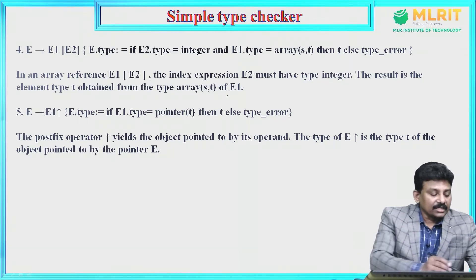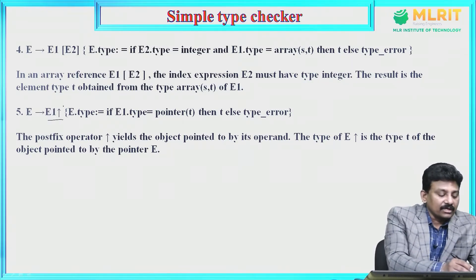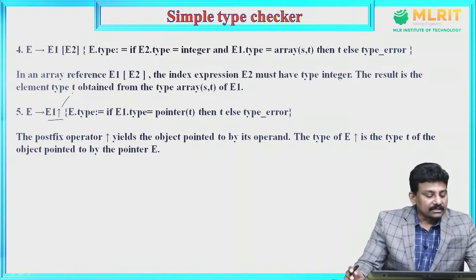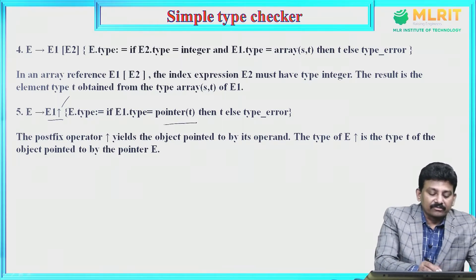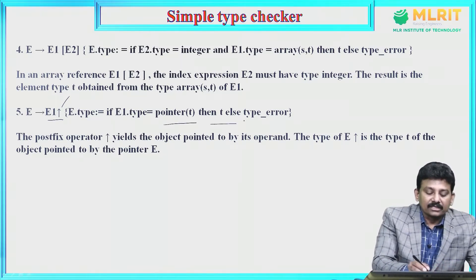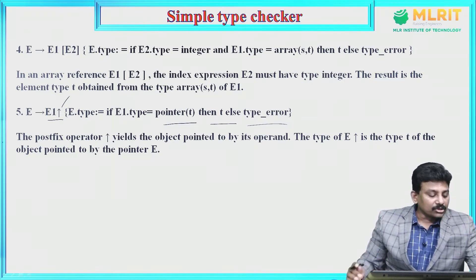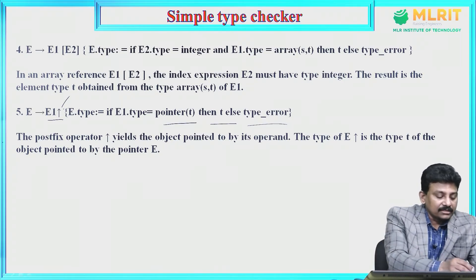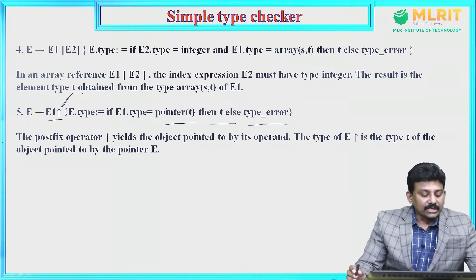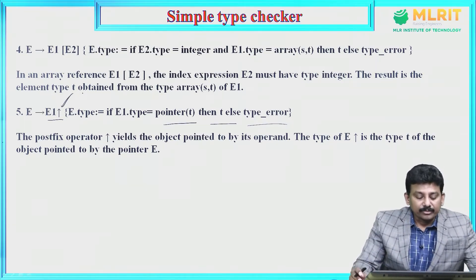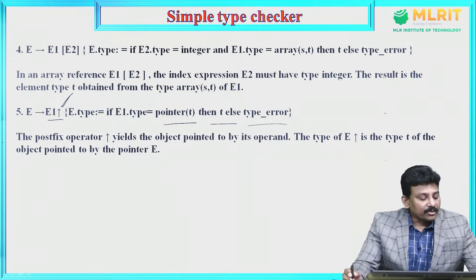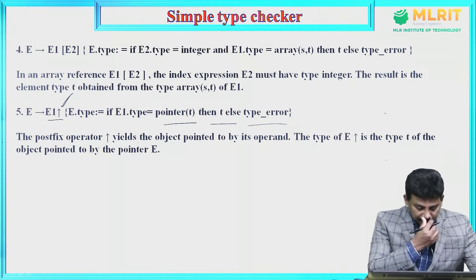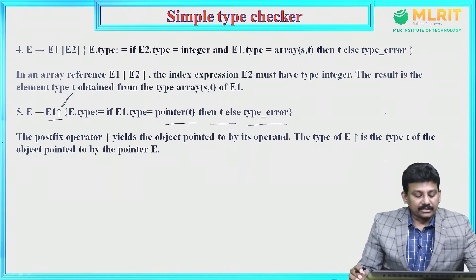Then, E derives E1 up-arrow, that is a pointer. E.type = if E1.type is pointer(t), then t, else type_error. The postfix up-arrow operator yields the object pointed to by its operand. The type of E up-arrow is the type of the object pointed to by pointer E.